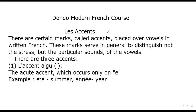In the Modern French course, there are certain marks called accents placed over vowels in written French. These marks serve in general to distinguish not the stress but the particular sounds of the vowels. There are three accents. The first is l'accent aigu, the acute accent, which occurs only on e. For example, été which means summer, and année which means year.